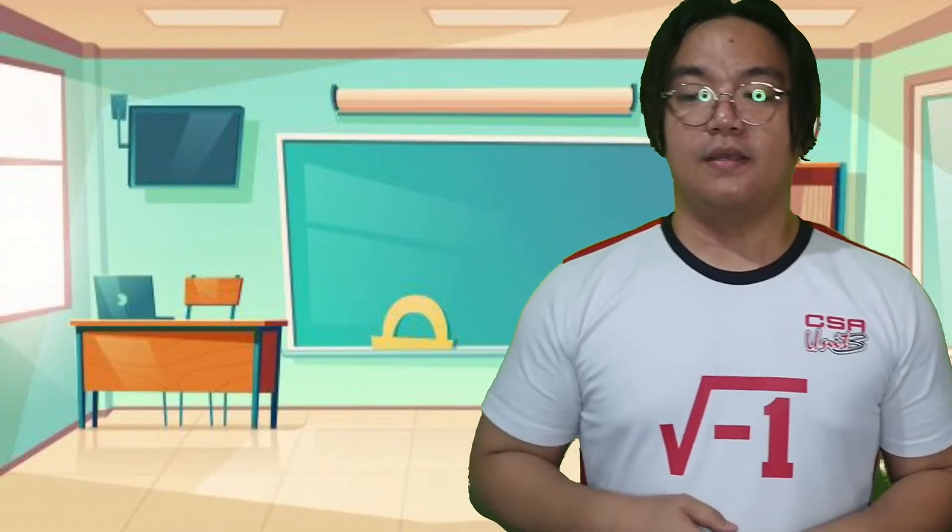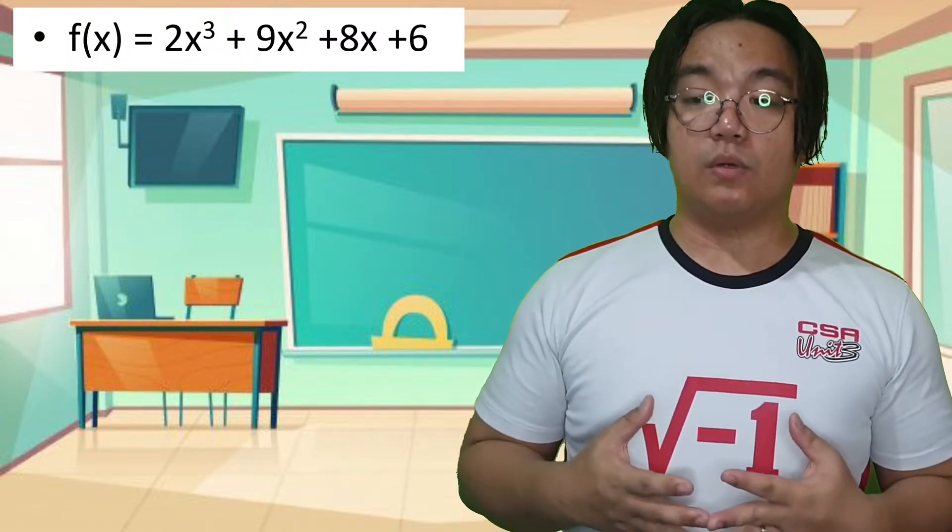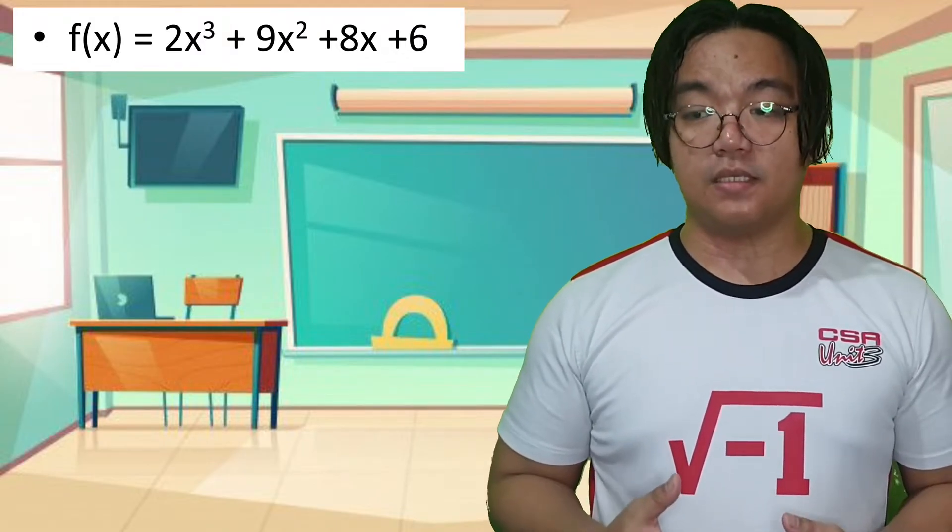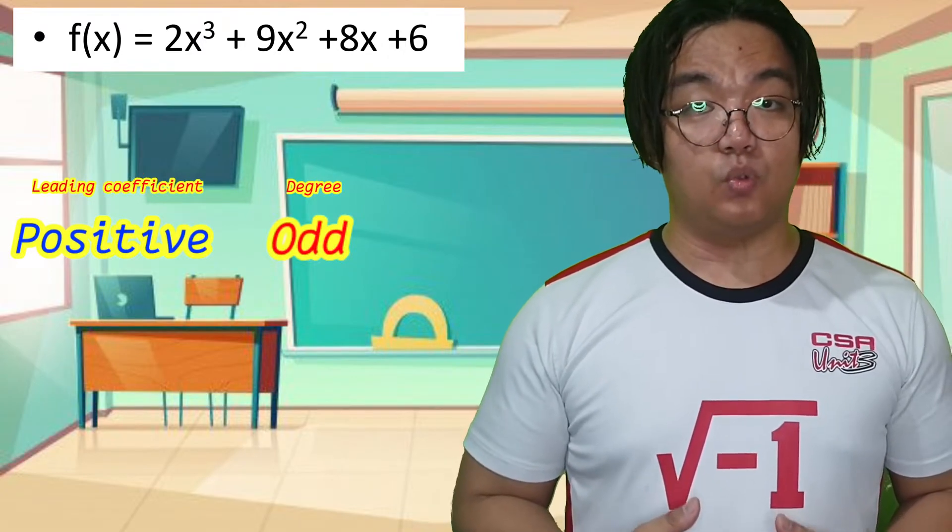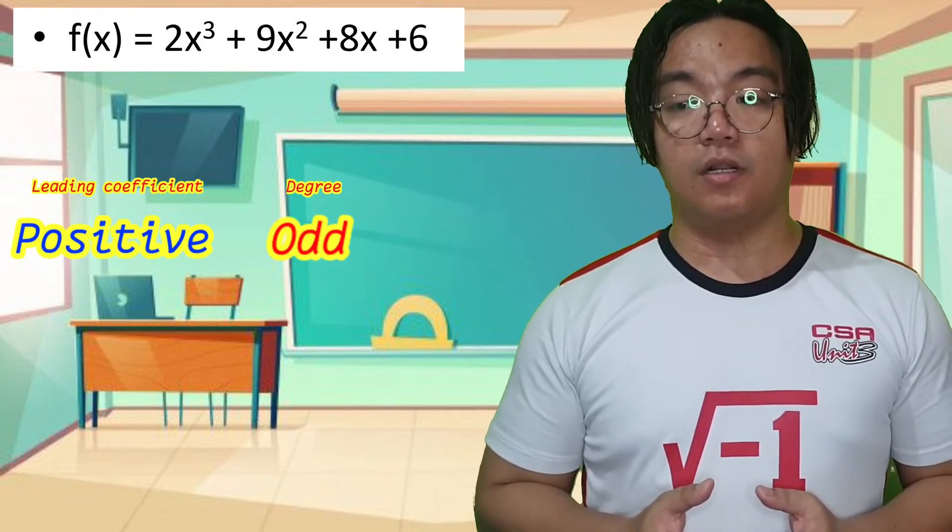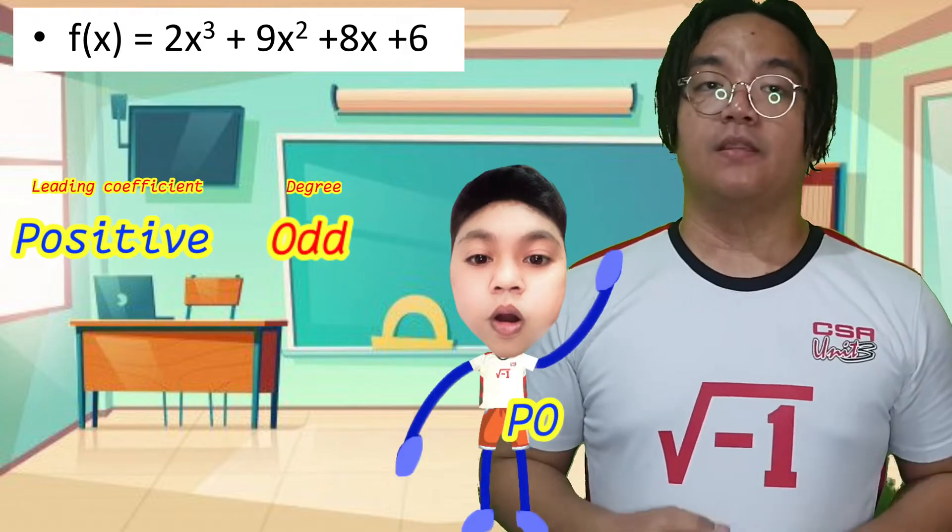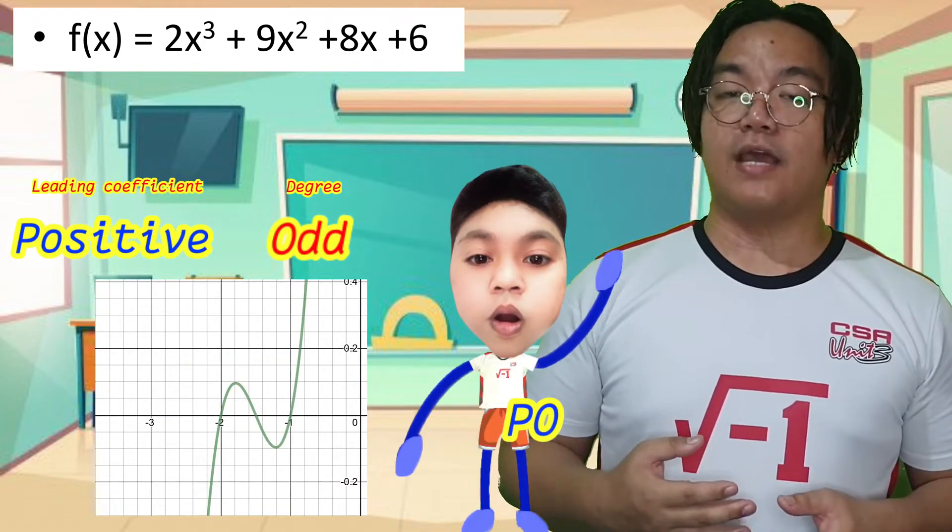Third example: The polynomial function f(x) = 2x³ + 9x² + 8x + 6, where the leading coefficient is positive 2 and the exponent of the leading term is an odd number. So it falls under PO in the penepono—positive odd. Therefore, the graph drops down to the left and rises up to the right.